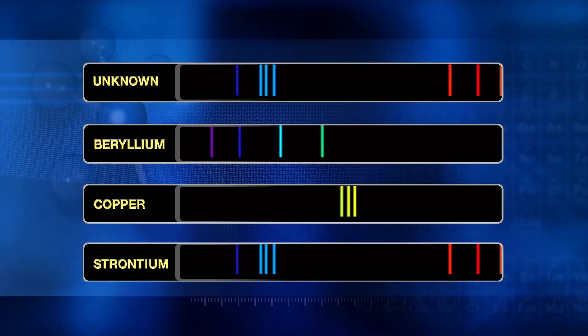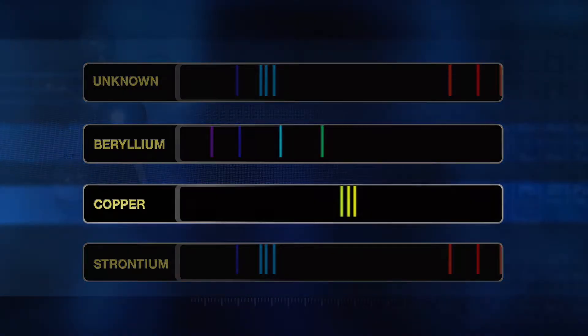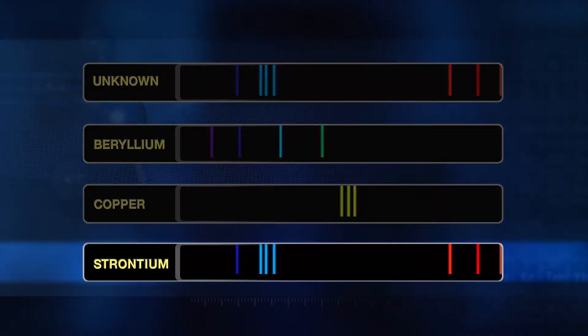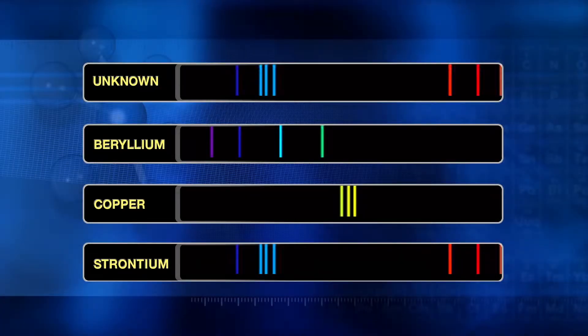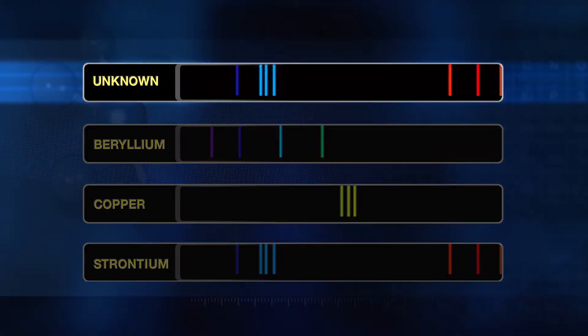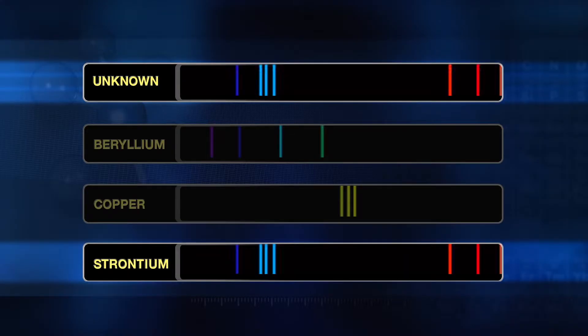The spectroscope separates those wavelengths from each other and gives us a fingerprint of sorts for each of the elements. These are spectra for three of the different flame test elements you tested: beryllium, copper, and strontium. You can see how the spectra are different for each. Using the identified samples, can you identify the unknown? That's easy — it's strontium. Right. Strontium and the unknown each have the same spectral lines. Good job!